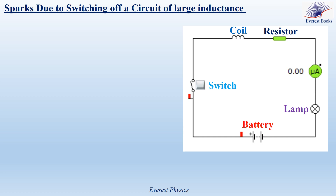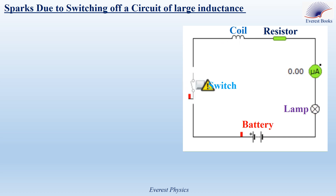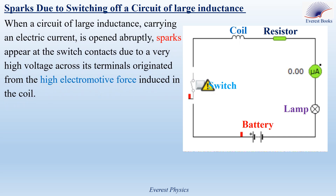In the shown experimental simulation, we have a battery, a lamp, an ammeter, a resistor, a coil of large inductance, and a switch. When we open the switch abruptly, sparks appear at the switch contacts. A current of 69.2 milliampere flows in the circuit. When opened abruptly, sparks appear due to a very high voltage across the switch terminals, originated from the high electromotive force induced in the coil.